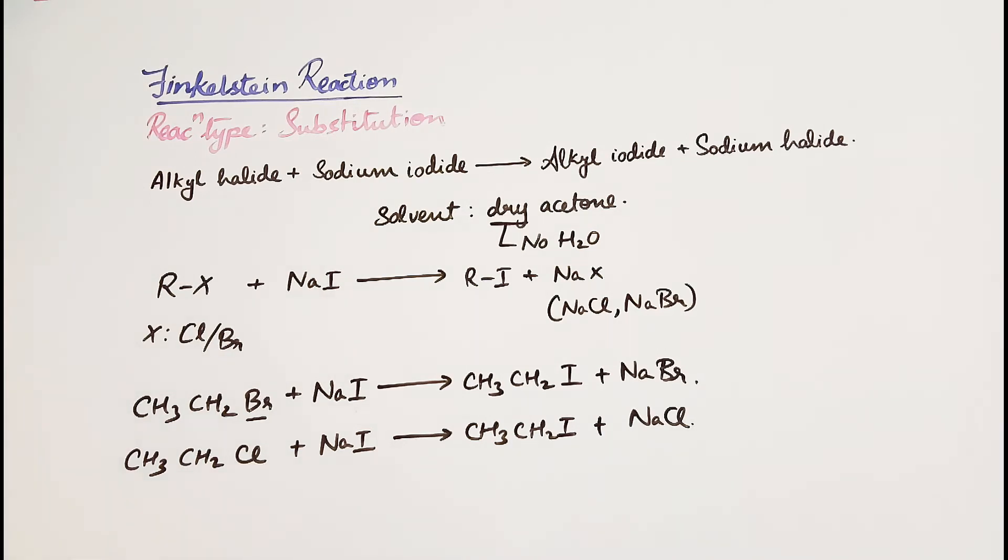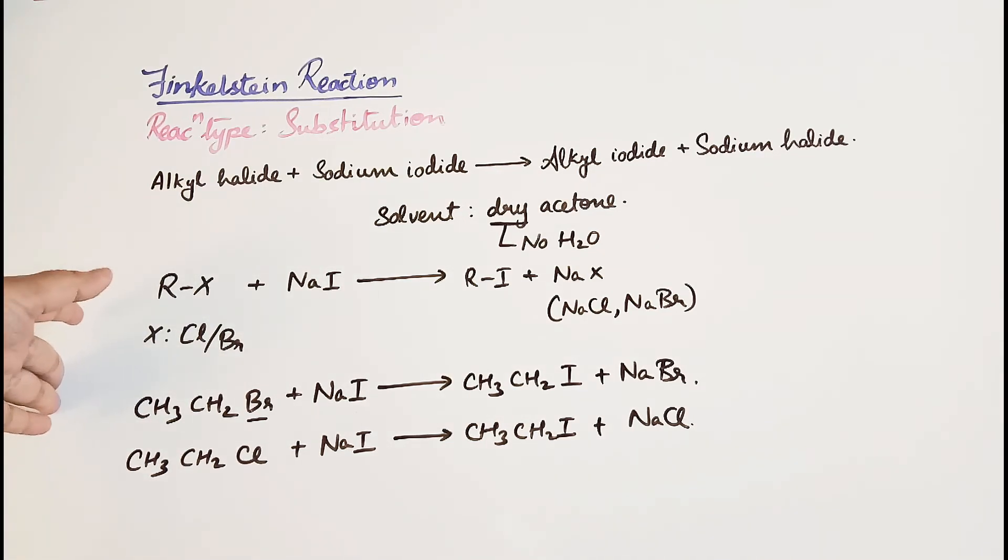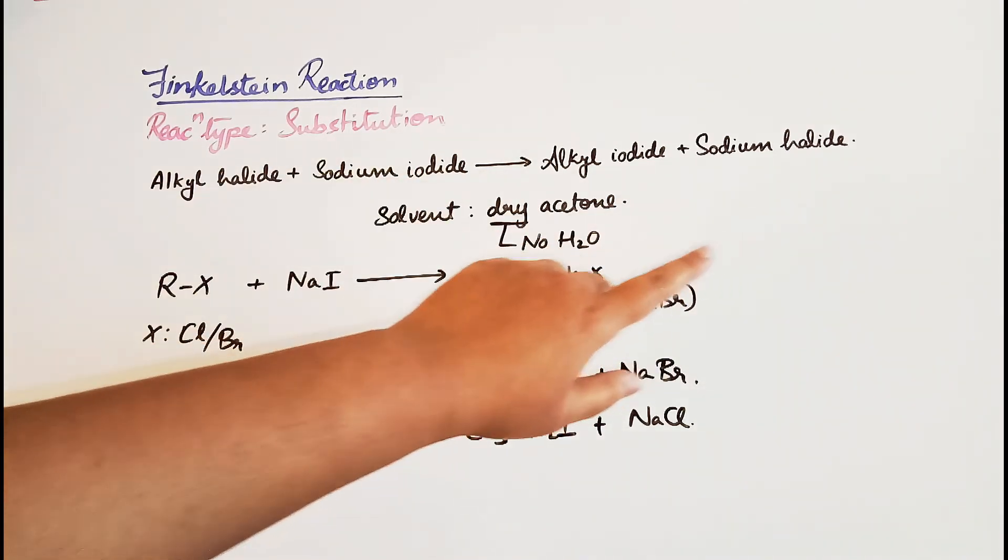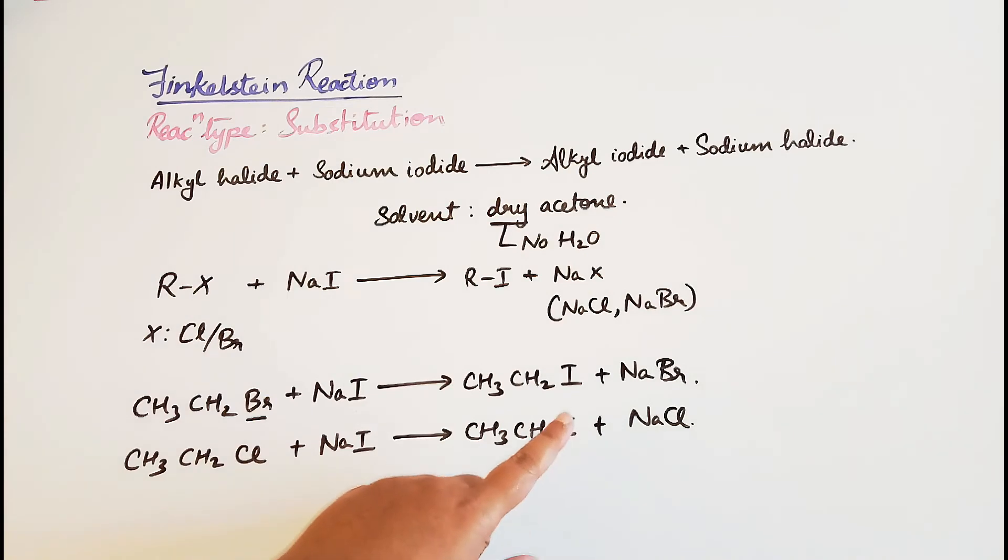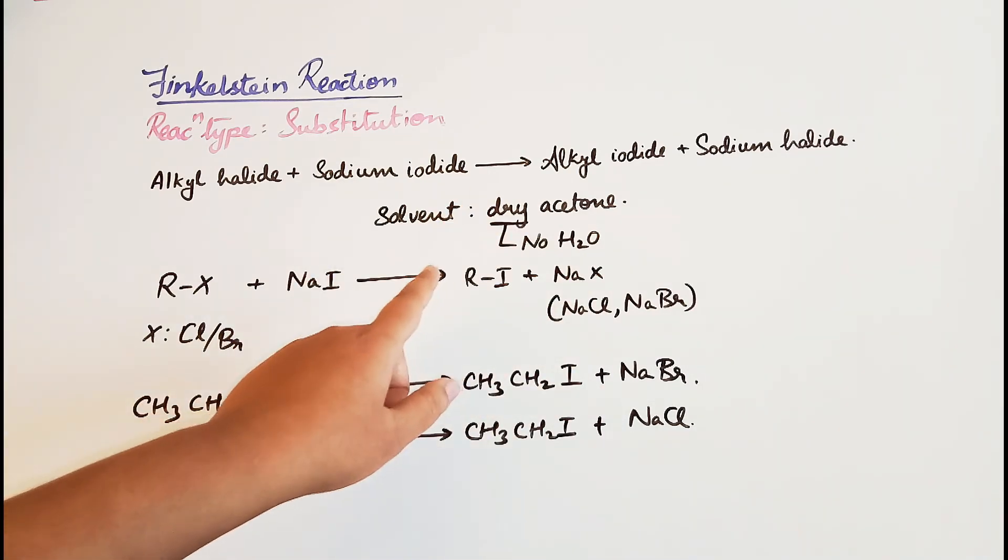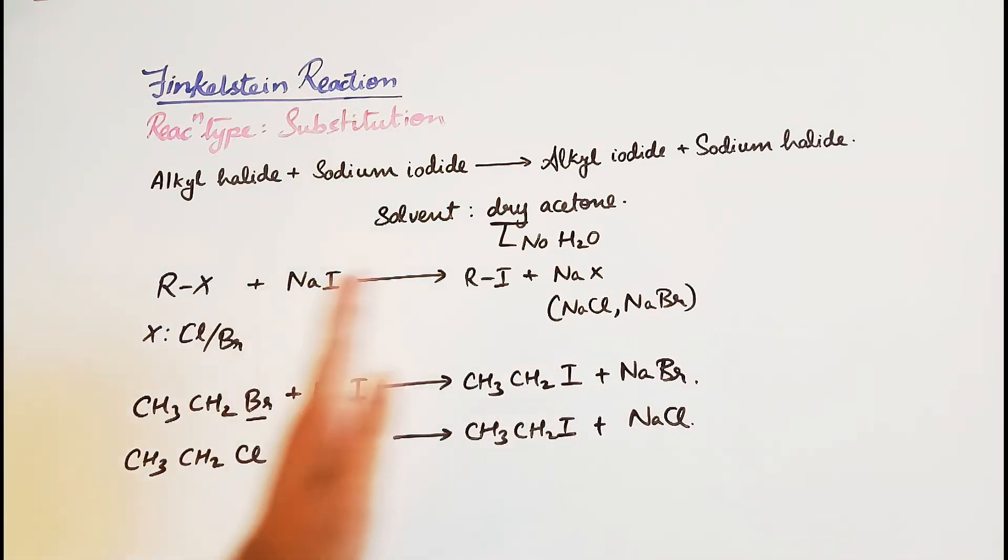To sum up, in the Finkelstein reaction, an alkyl halide reacts with sodium iodide in dry acetone to form alkyl iodide plus sodium halide. We use dry acetone because the sodium halides formed - sodium chloride and sodium bromide - are insoluble in dry acetone, and this drives the reaction forward.